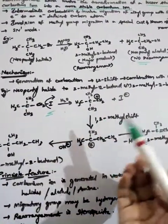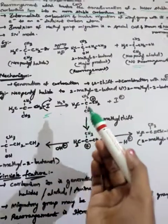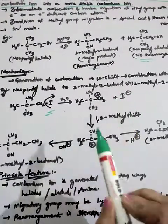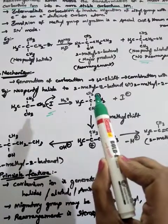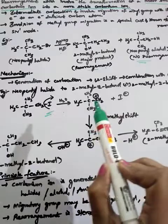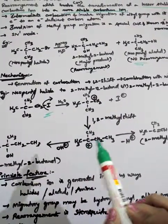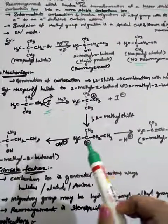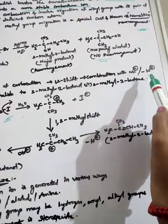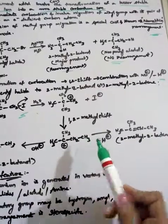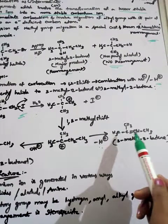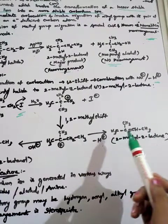A 1,2-methyl shift then takes place: the methyl group migrates, forming a new carbocation on the adjacent carbon. The carbocation is transferred to this carbon — a 1,2-change is seen between the first and second carbon.